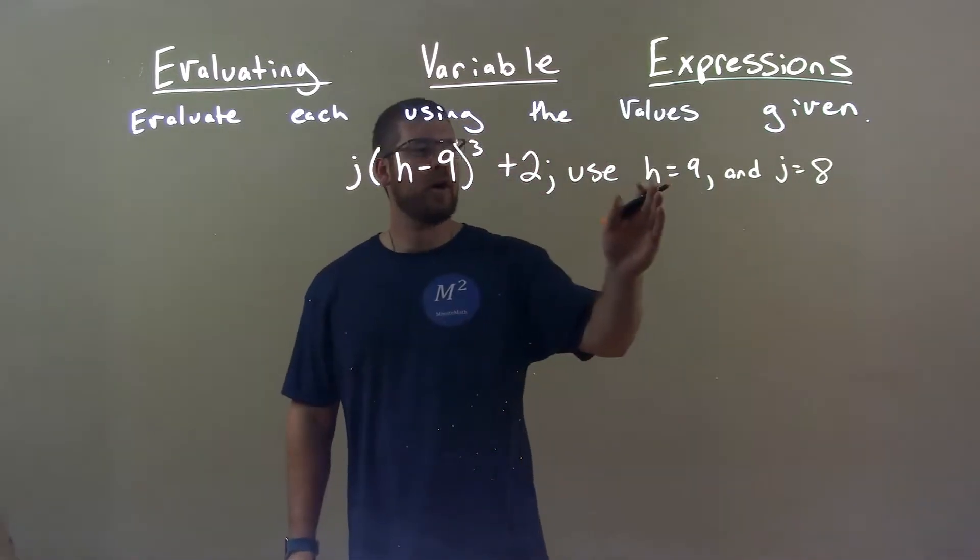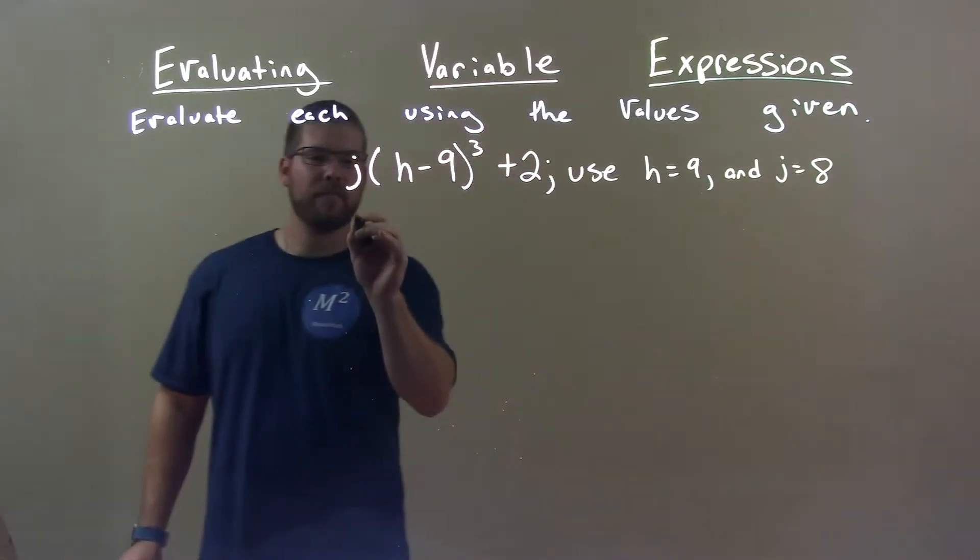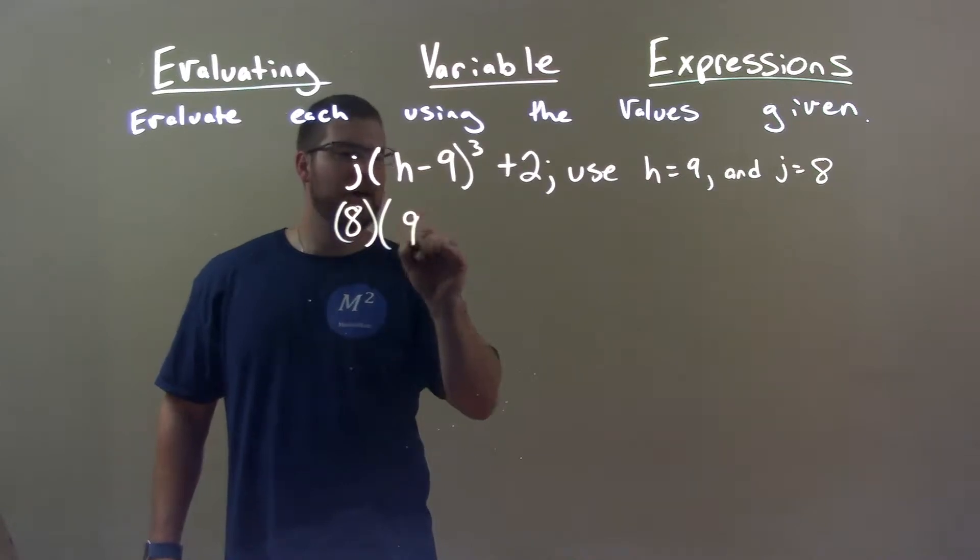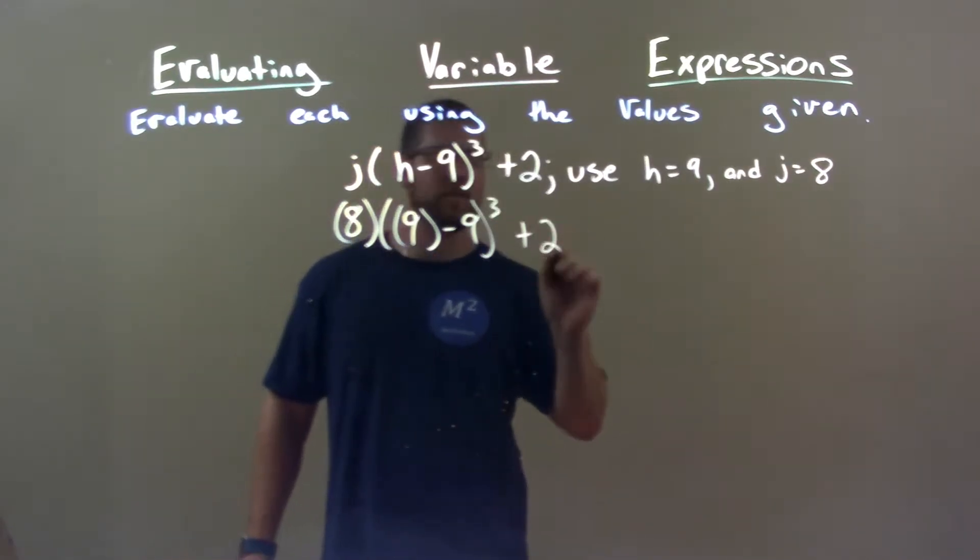First step, substitute our variables for their corresponding numbers. j is 8 right here, and h is 9. And bring down the plus 2.